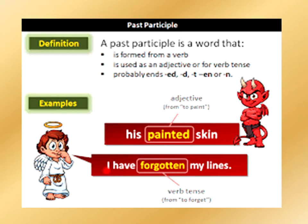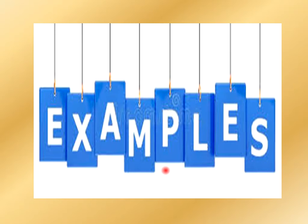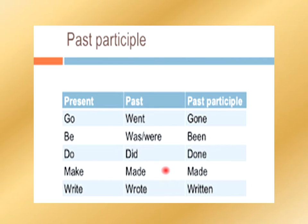For verb tense — from the verb 'to forget,' we have the sentence: 'I have forgotten my lines.' So over here, 'forgotten' is the past participle.